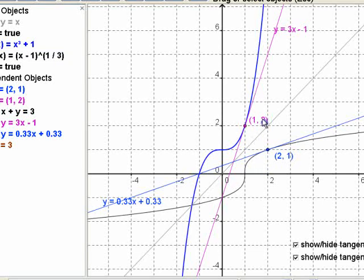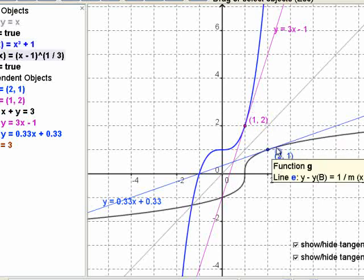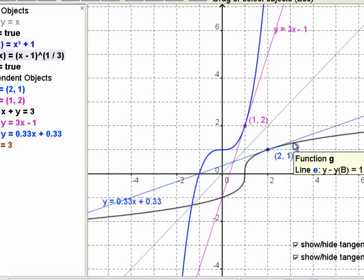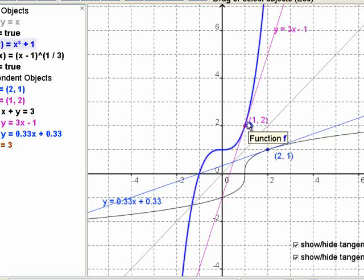If this point is called a, b here, the slope of f of x at a is the reciprocal of the slope of its inverse at b, or at the function value here. This is a... This is f of a. This is its... The reciprocal, right?